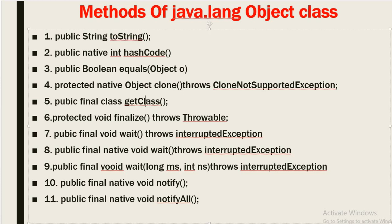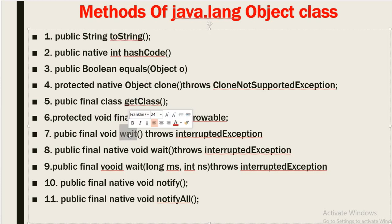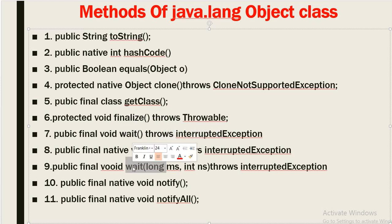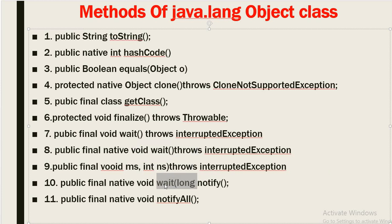The remaining Object class methods include several wait() method overloads — wait() with no parameters, wait() with a timeout parameter, and wait() with two parameters. Additionally, there are the notify() and notifyAll() methods.